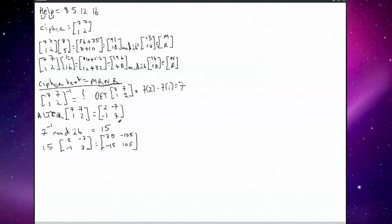Because we're working within the modular base of 26, some of the resulting numbers are larger than 26, which creates an issue. So we need to apply modular arithmetic to convert them into numbers within our acceptable range — mod 26. So 30 mod 26 gives a remainder of 4. Minus 105 mod 26 gives a result of 25 — you keep adding 26 until you get into the positive domain. Minus 15 mod 26 gives a remainder of 11. And 105 mod 26 gives a remainder of 1. So there is our inverted matrix.